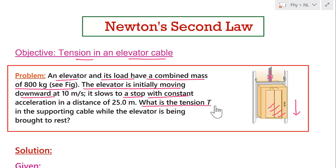The question asks: what is the tension T in the supporting cable while the elevator is being brought to rest? One important point — you can expect that this tension has to be greater than mg, the weight of the lift, because this tension must decelerate the elevator. To decelerate it, the cable must apply more force than mg. So the final answer for tension should be greater than mg, as we will confirm at the end.